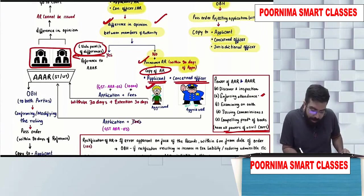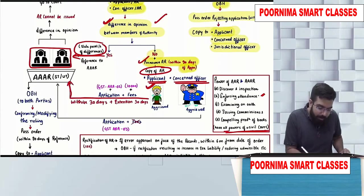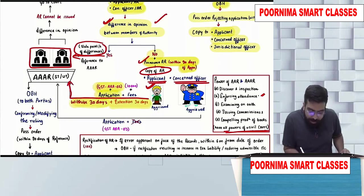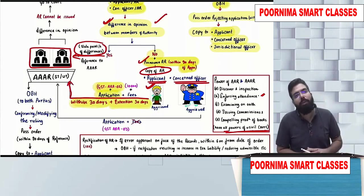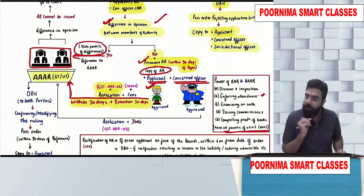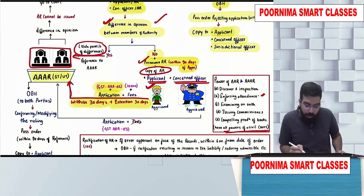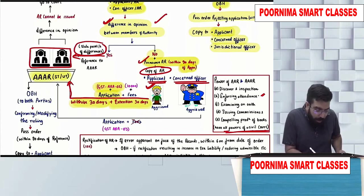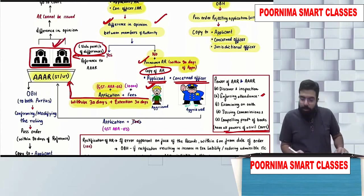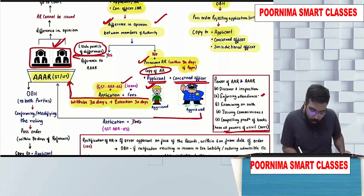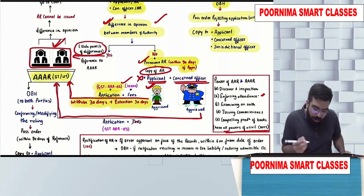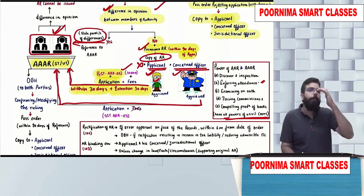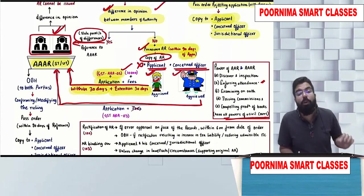If the applicant is aggrieved, he will go ahead and apply in GST ARA-02 within 30 days, and an extension of 30 days can be granted by the AAAR. The fees to go to AAAR is 10,000 rupees. If the officer is aggrieved, the officer can also go, and in that case the application should be in GST ARA-03 and the fees payable is nil.